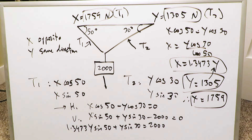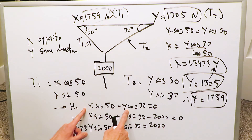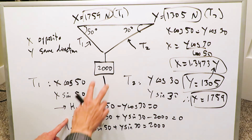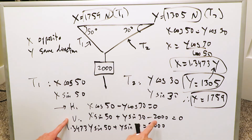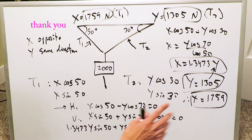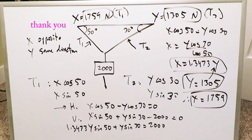To recap: components in opposite directions subtract — those are your horizontal components. Vertical components are always in the same direction but opposed by the weight, so they add while the weight subtracts. From there you set up two equations and solve for your two variables to get the tension values you need. And that's it for this video — thank you, have a good day.